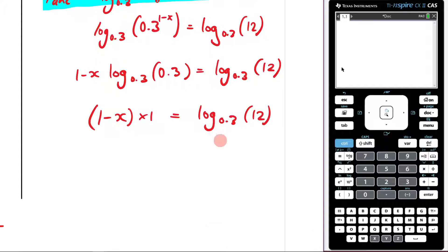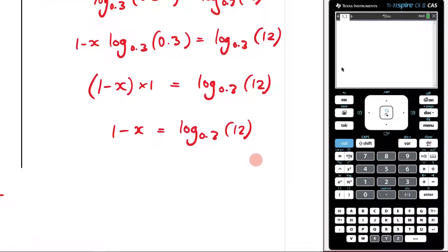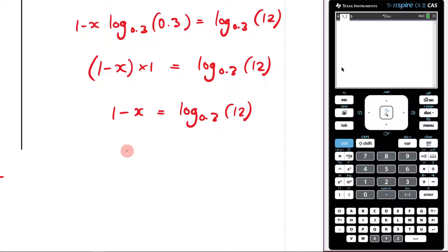So that means what I'm going to be left with is 1 minus x equals log base 0.3 of 12. Then I will subtract 1 and divide across by negative 1, giving negative log base 0.3 of 12 plus 1. And that is my answer.